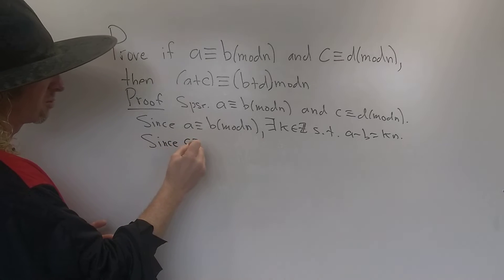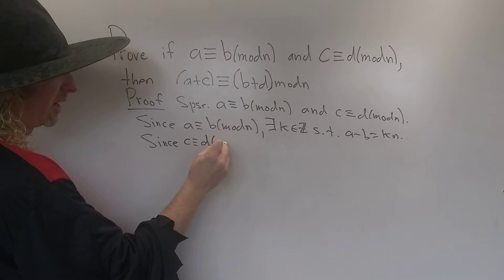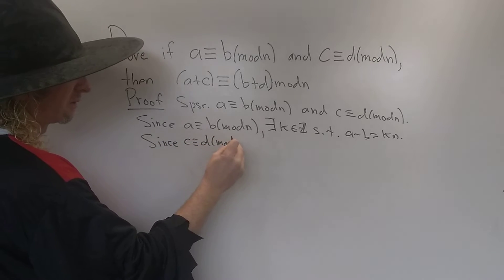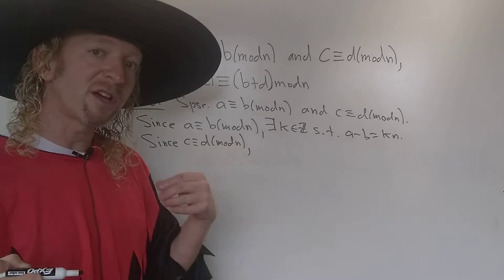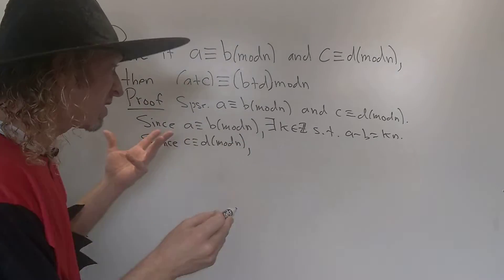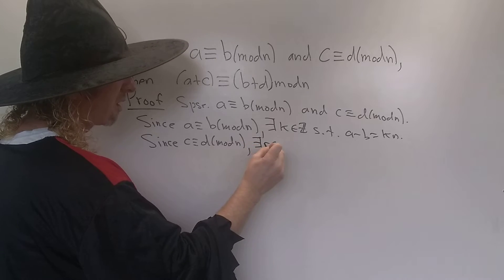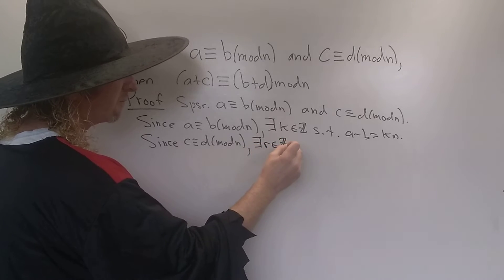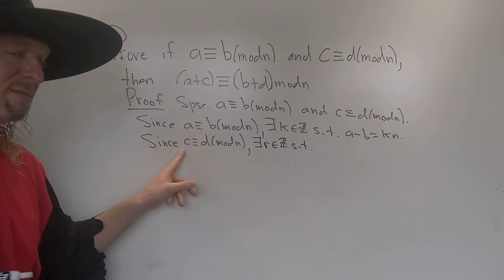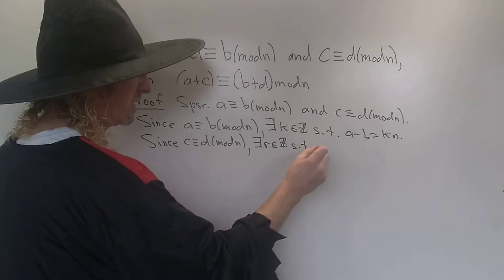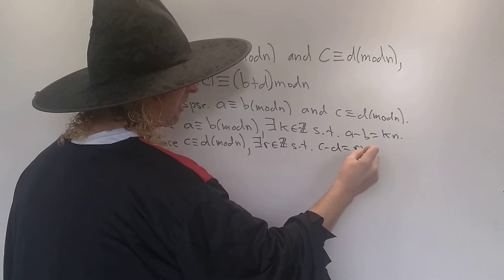We do the same thing with the other assumption. Since C is congruent to D modulo N, this means there exists another integer — we have to use a different letter, I'll use R — such that C minus D is a multiple of N, so C minus D equals RN.